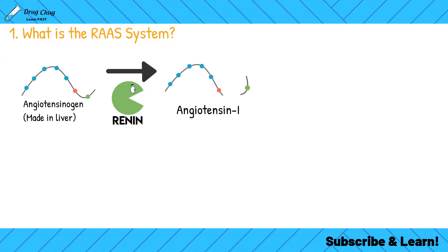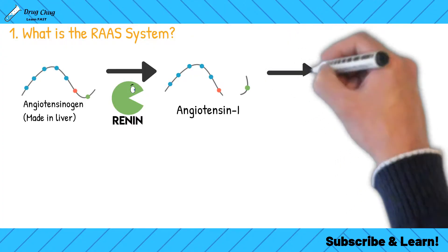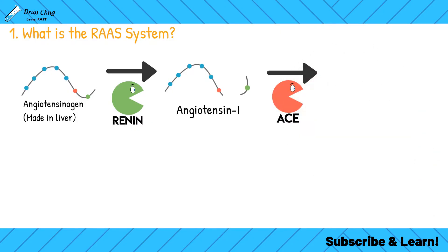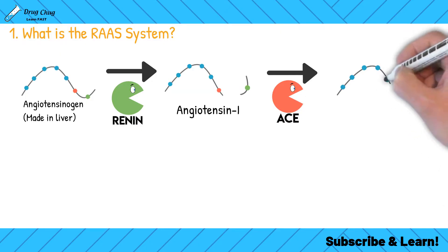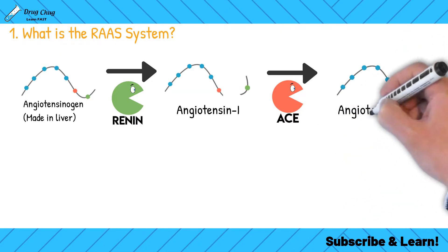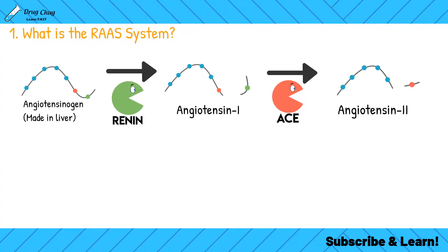Angiotensin 1 then goes and finds an ACE enzyme — ACE stands for angiotensin-converting enzyme. What ACE does is it converts angiotensin 1 to angiotensin 2. Angiotensin 2 has another peptide cleaved off, leaving only the blue peptides intact. Angiotensin 2 is the reason the RAS system exists — it causes everything we're about to talk about.